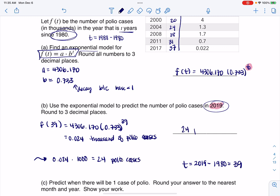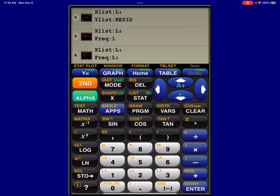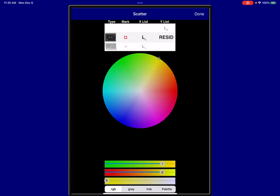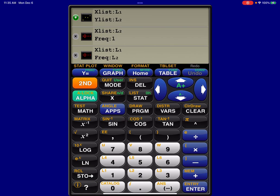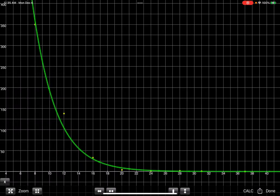We've got 24 polio cases. If you didn't think to do that, that's fine. You could have also written 0.024 thousand polio cases. Either way is fine. You keep the original units or you convert them. One other thing I want to mention is you can actually go into your calculator. Let me go ahead and turn this plot on. I don't have it on right now. Let me go L1 against L2 and let me go ahead and graph this.